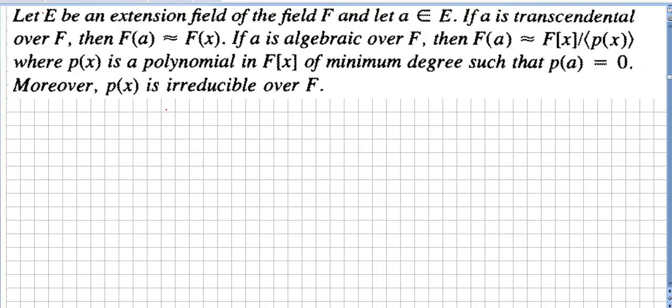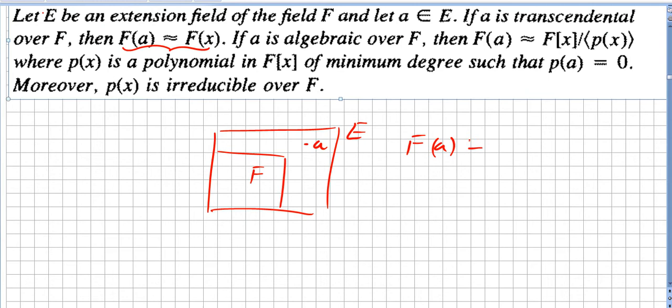Now to check some other characteristics of extensions. Let E be an extension field of the field F and let a be in the extension field. So we have F, we have E here, and we have a in E. If a is transcendental over F, we can say that F(a) is isomorphic to F(x).